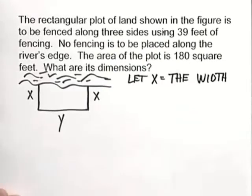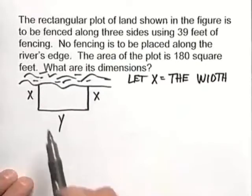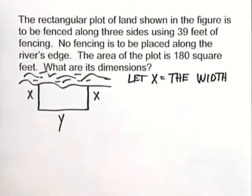Well, I've drawn a picture here. You've got your river running through it, your border on three sides, and we know that has to be a total of 39 feet. We're going to let x equal the width and y will be the length.